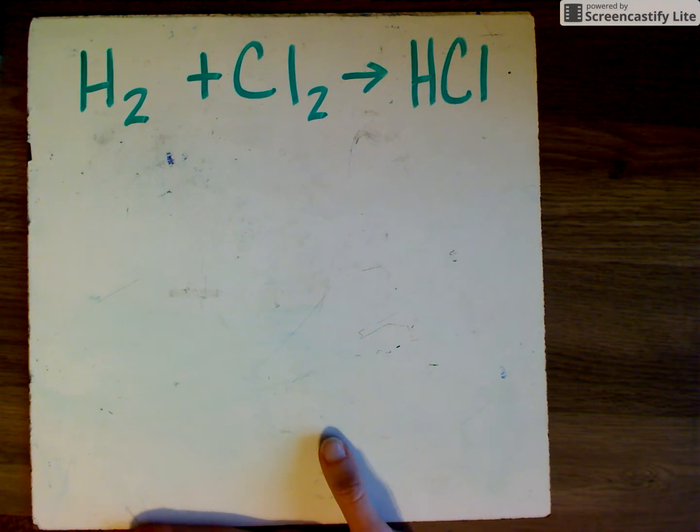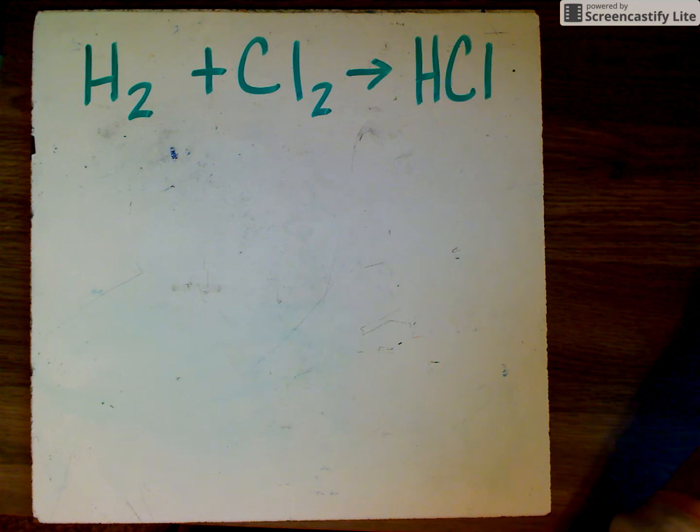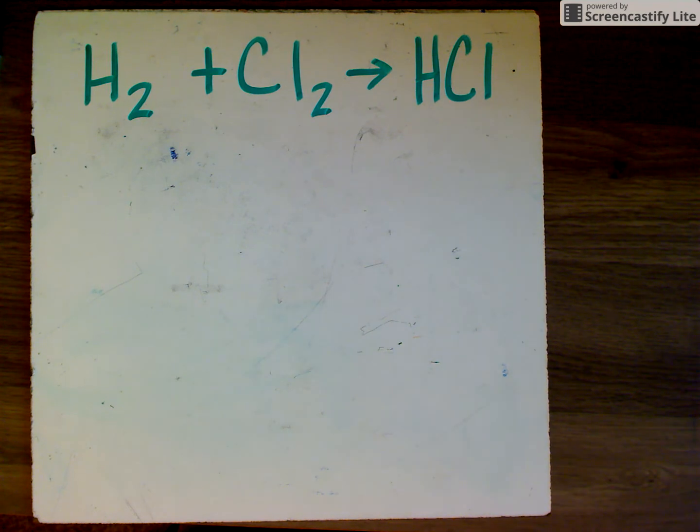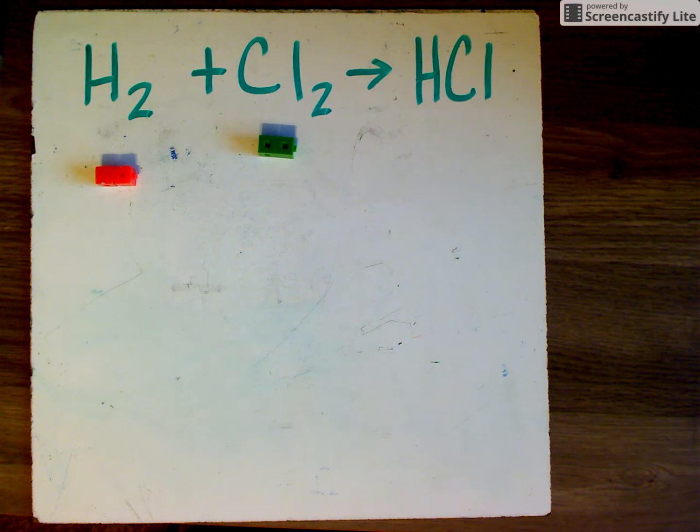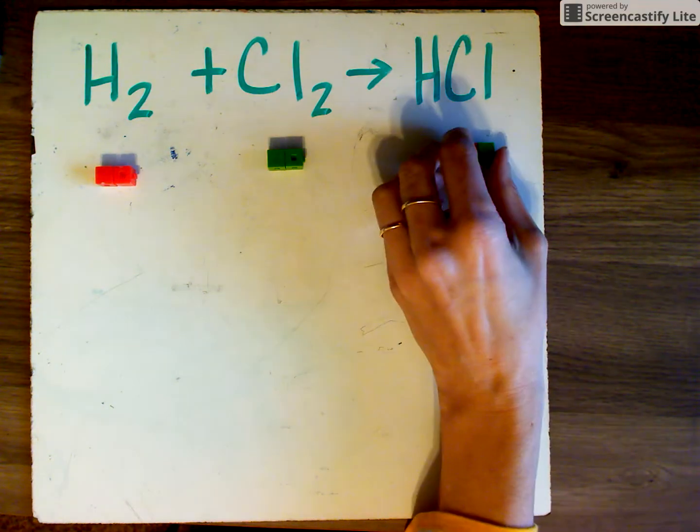Here we have a chemical equation for how hydrogen and chlorine react to make hydrochloric acid. Hydrochloric acid is stomach acid. If I wanted to represent this with my little cubes, H2 would look like this. It would have two atoms of hydrogen chemically bonded in a compound. We would have Cl2, and our product would be HCl.